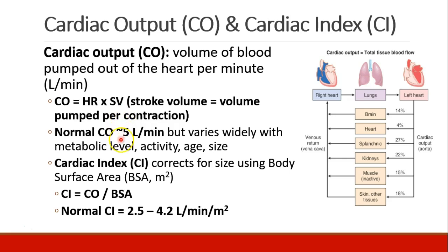A normal cardiac output is about 5 liters per minute, but it varies quite a bit depending on the patient's metabolic level, their activity, their age, and their size. For this reason, sometimes we use the cardiac index, which corrects the cardiac output based on the patient's size using their body surface area, measured in meters squared.